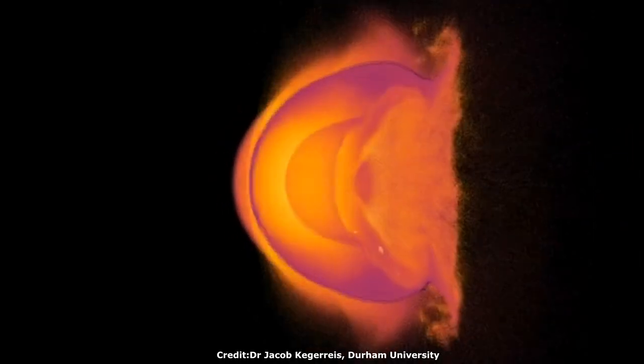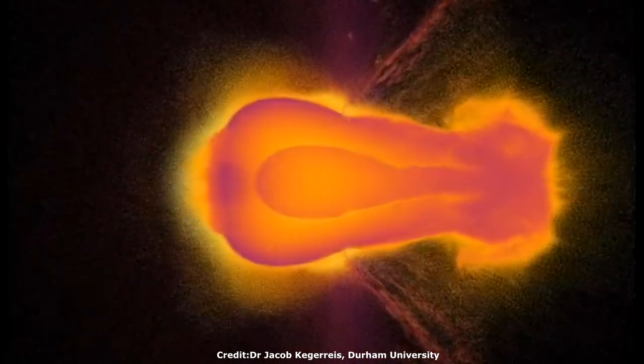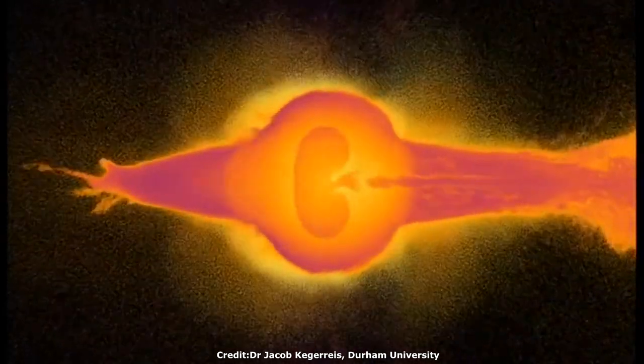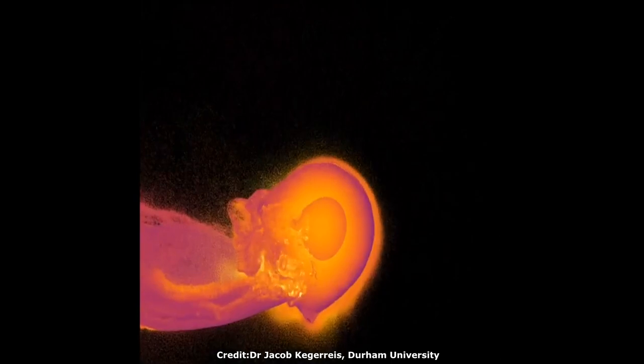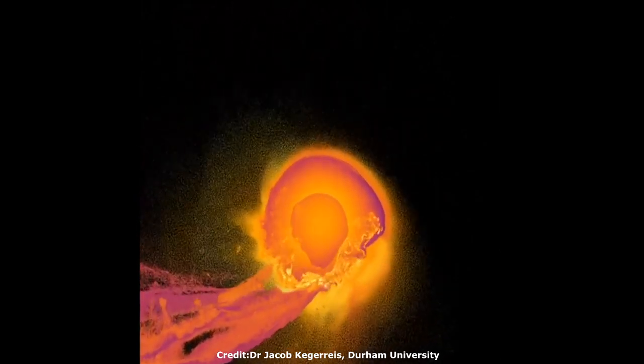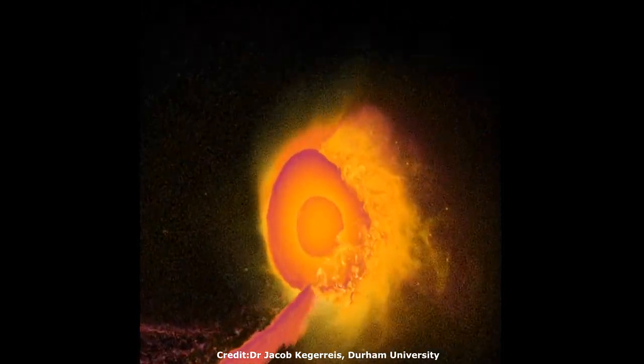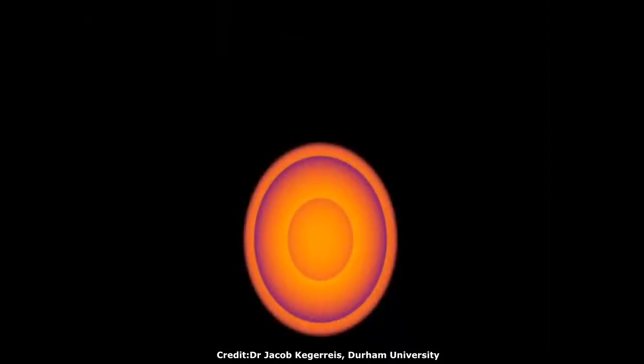Over millions of years, these planetesimals collided and merged, eventually forming the planets, moons, asteroids and comets that make up our solar system today. The intense solar wind from the young sun blew away much of the remaining gas in the protoplanetary disk, leaving behind a relatively stable system of planets.